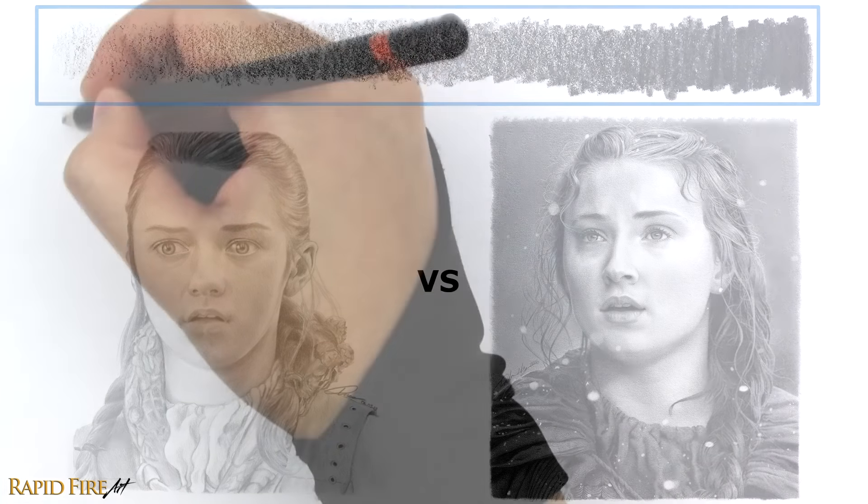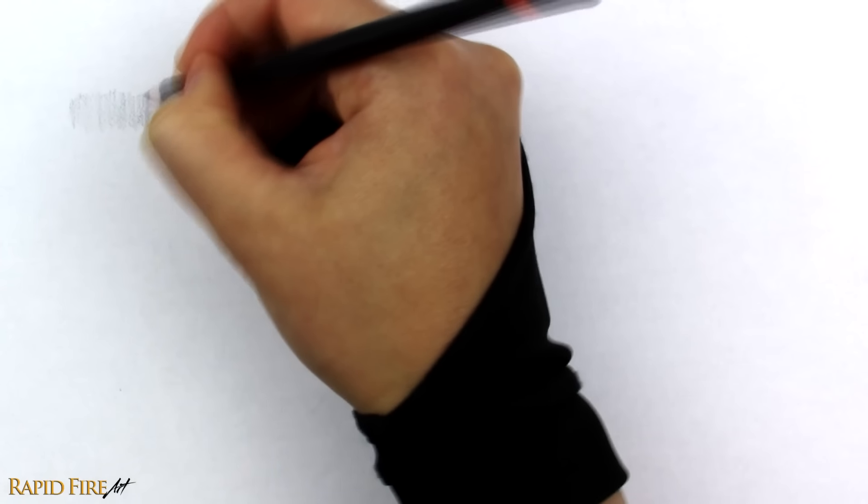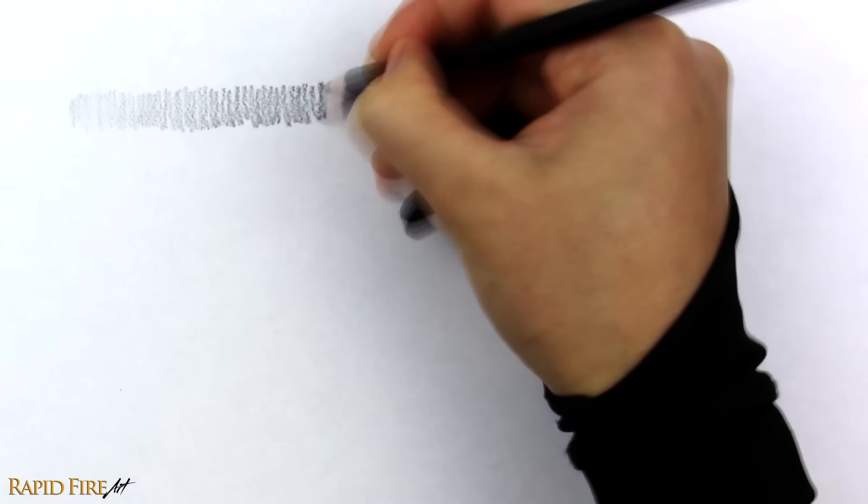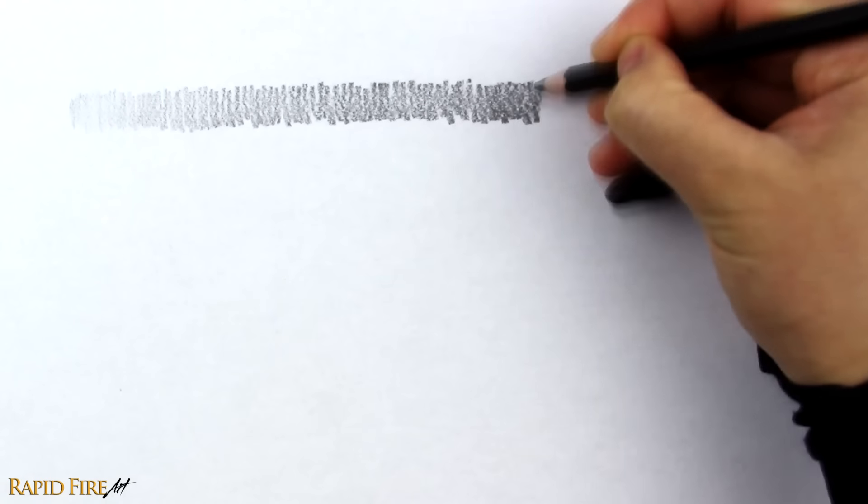To have good pressure control, practice shading from one end of your sketchbook to the other, while pressing harder and harder until the values get darker gradually.